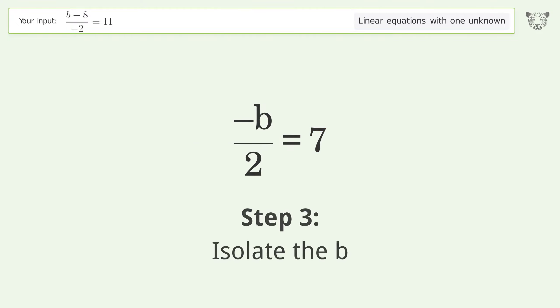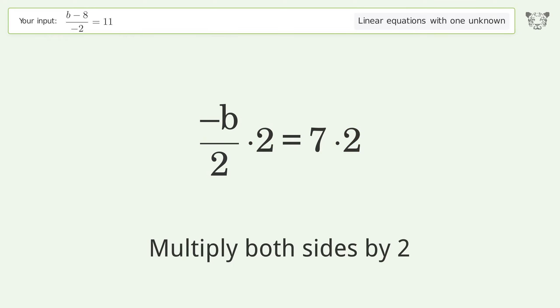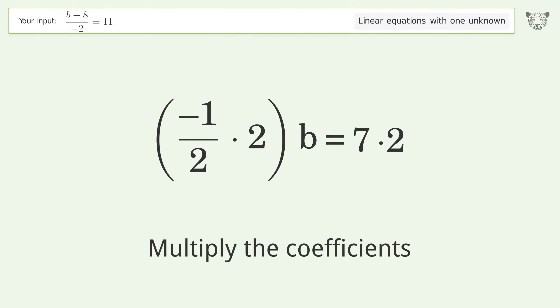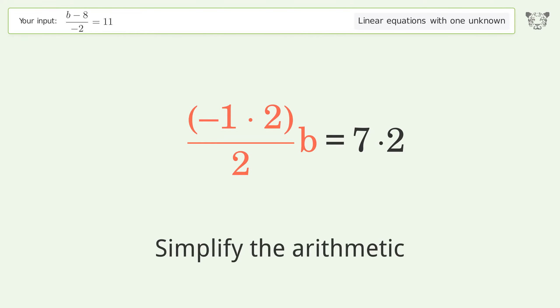Isolate the b. Multiply both sides by 2. Group like terms. Multiply the coefficients. Simplify the arithmetic.